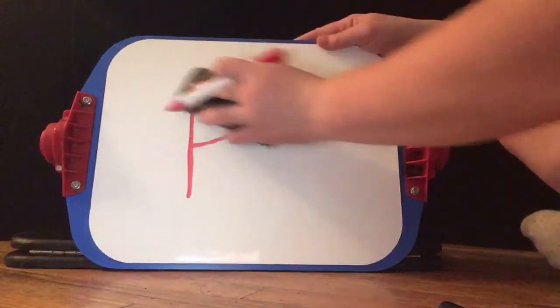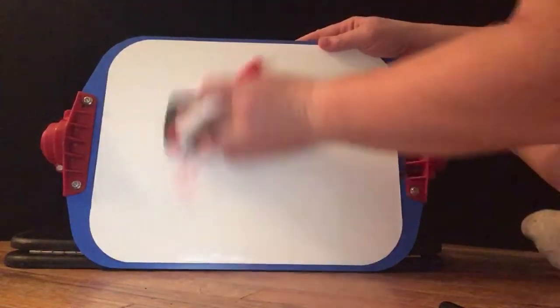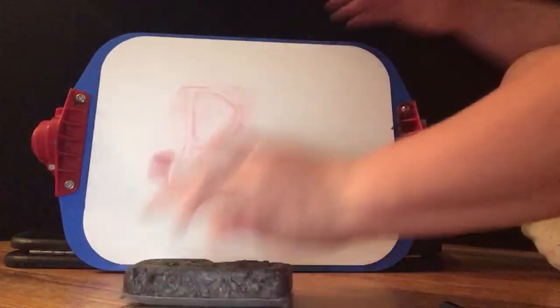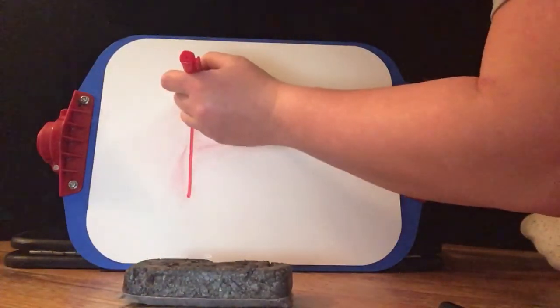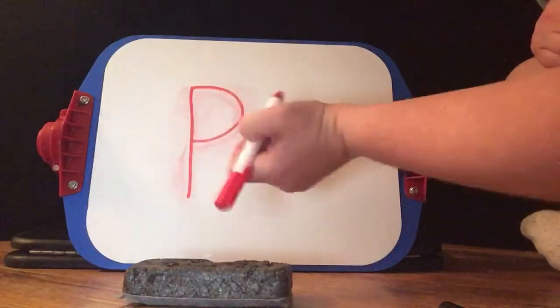I'm going to erase it and write it again. To make a P, we do a big line down, come back to the top, small curve.